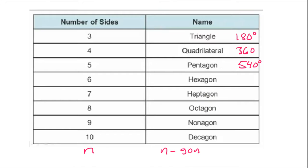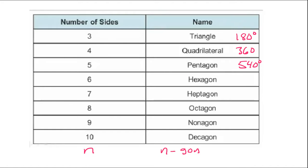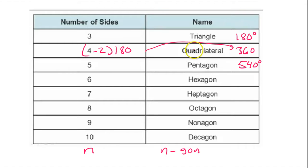If we wanted to keep going, it's useful to realize that we're always multiplying times 180. But to get the number of triangles, it's always n minus 2. So if n is 4, I'm going to do 4 minus 2 times 180 — that's going to give me 360. If I've got a pentagon, I'm doing 5 minus 2 times 180 — that's going to give me 540.